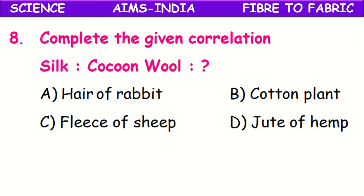Complete the given correlation. Silk is obtained from cocoon, whereas wool is obtained from where? It is obtained from the fleece of sheep.